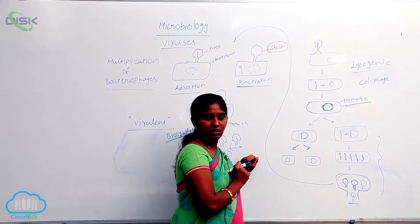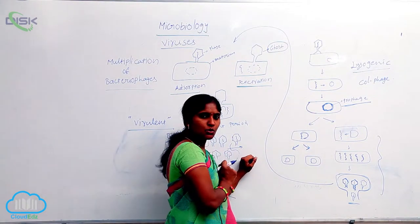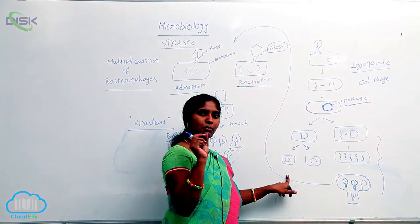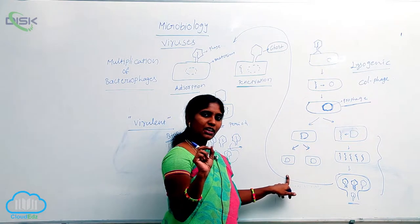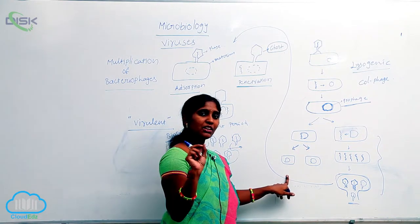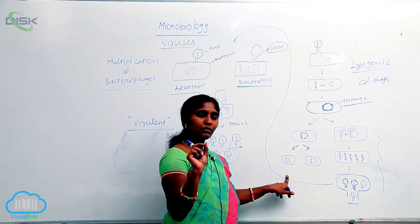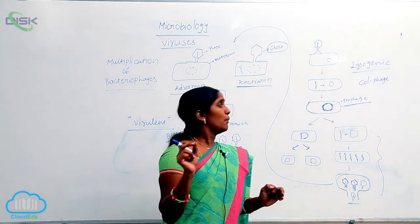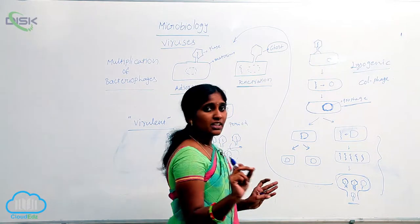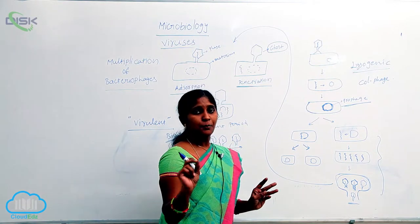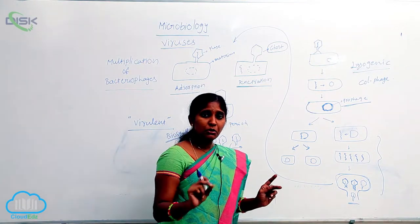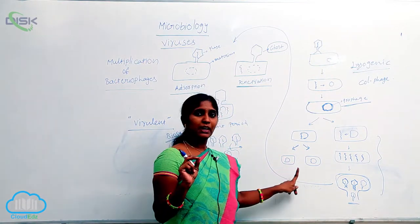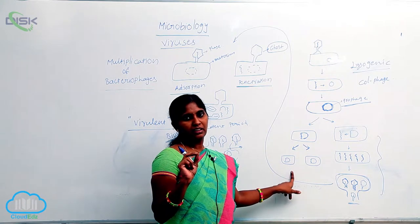Bacteria's progeny — you see here — the produced bacteria have what type of DNA? That is prophage DNA. It is a combination of viral and bacterial DNA.